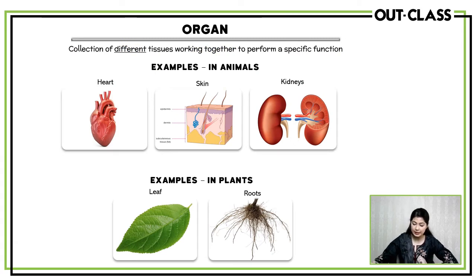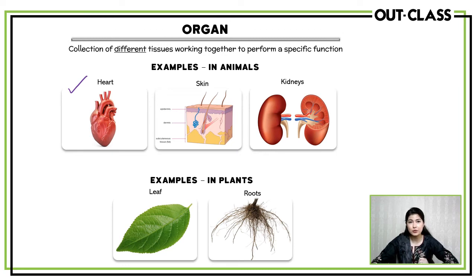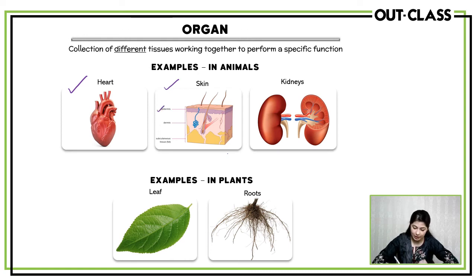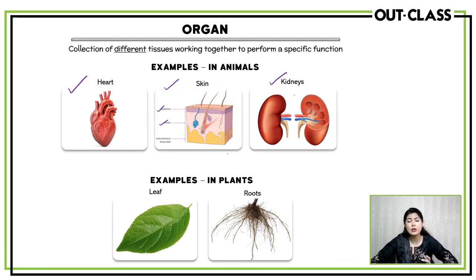What are examples of organs in animals? The heart is made up of many different types of tissues — epithelial tissue, muscle tissue and nervous tissue — together forming one organ known as the heart. Then you have the skin, which has epidermal and dermal tissues. Then you have the kidneys, lungs, liver, stomach, intestines and our brain — they are all composed of different types of tissues.